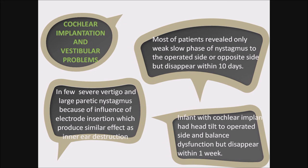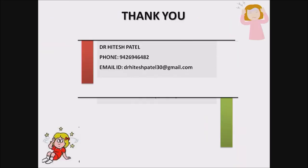Cochlear implantation and vestibular problems: most patients reveal only weak slow-phase nystagmus to the operated or opposite side, but it disappears within 10 days. In a few patients, severe vertigo and large paretic nystagmus occur due to the influence of electrode insertion, which produces a similar effect as inner ear destruction. Infants with cochlear implants had head tilt to the operated side and balance dysfunction, but it disappears within one week. Thank you.